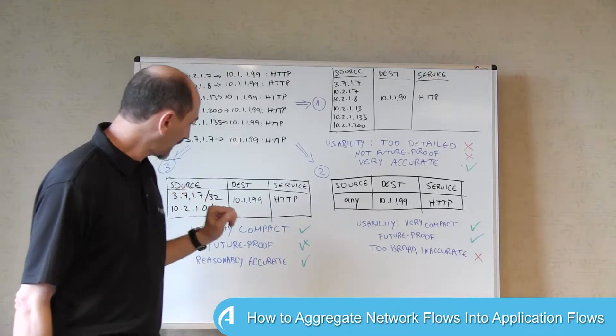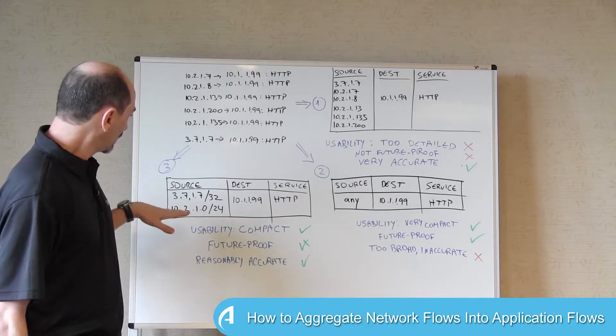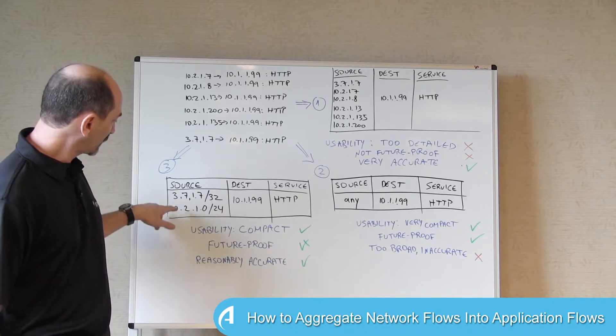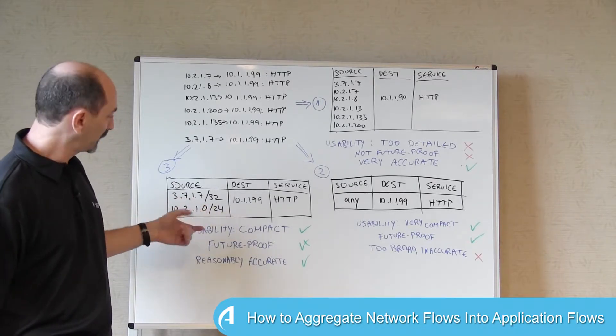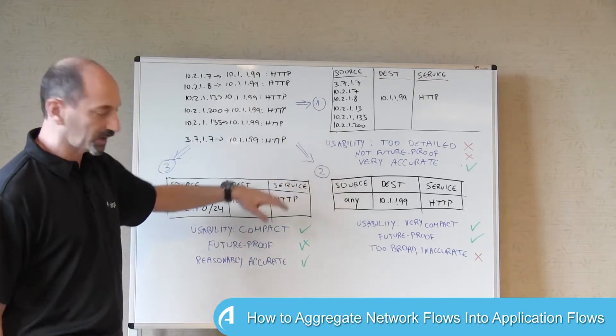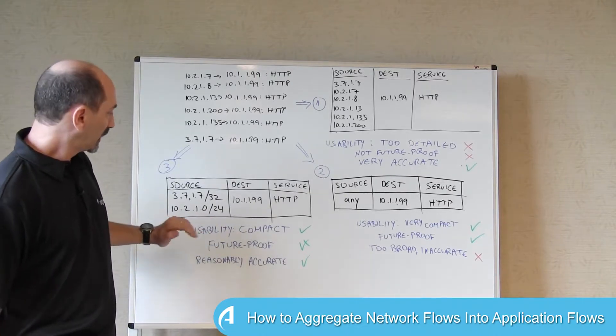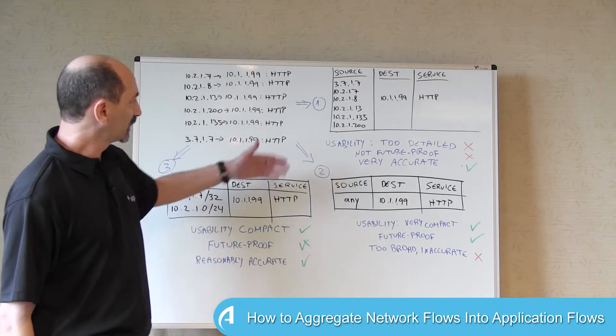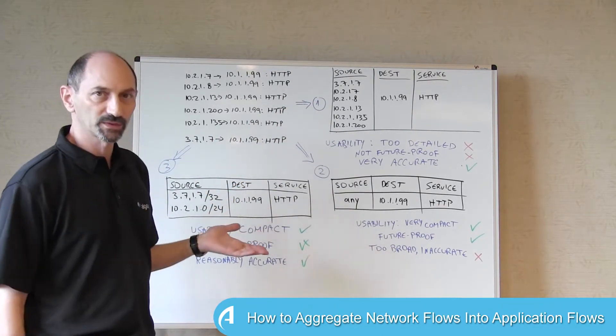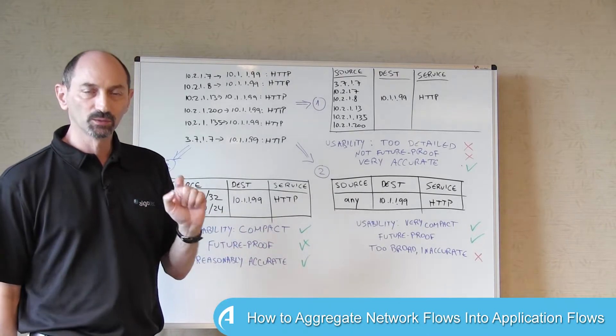And trying to strike the balance is what I have here in option number three, where you can see that the destination and service are as before. But in terms of the source, we have the 3.7.1.7 IP address appears separately as a slash 32 CIDR block. And the five other IP addresses appear as 10.2.1.0 slash 24, which is wider than what was strictly observed. This allows or describes 256 possible IP addresses, but they're all grouped together in one subnet.